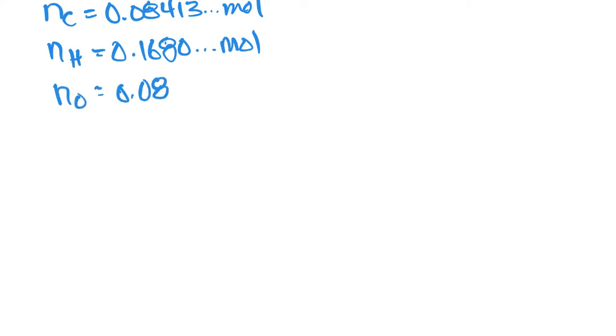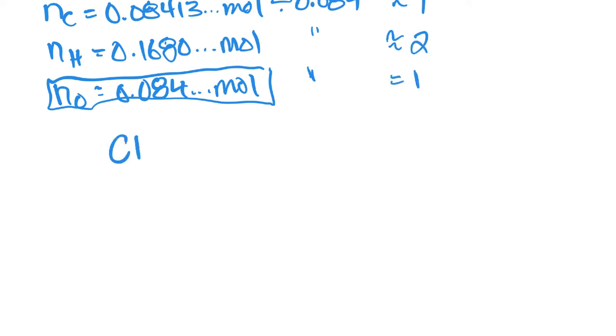From here now we have moles of carbon, which was 0.08413 moles, we have moles of hydrogen, which was about 0.1680 moles, and we have moles of oxygen, which is about 0.084. Now we need to figure out the ratios in order to come up with the empirical formula. The number of moles of oxygen is our lowest one, which means we need to divide each of these by 0.084. We'll do that calculation for each, and that gives us a ratio of approximately 1 to 2 to 1. So our empirical formula would be CH2O, and that's the answer for part A.